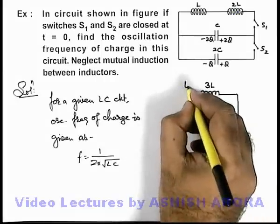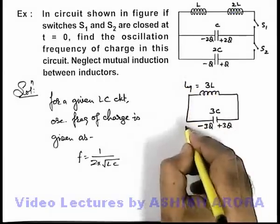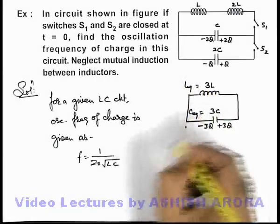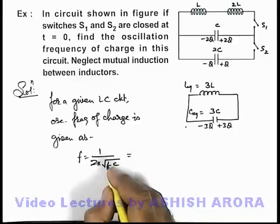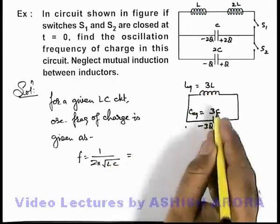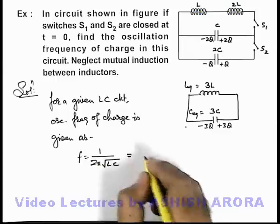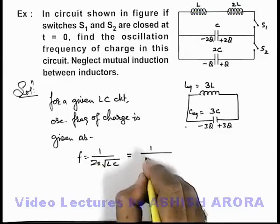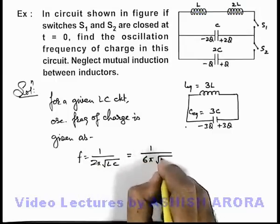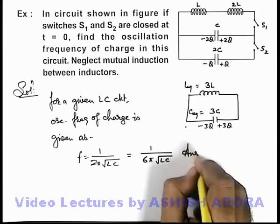Here, L_equivalent is 3L and C_equivalent is 3C. Substituting 3L for L and 3C for C into the formula, we get f = 1/(6π√LC). That is the answer to this problem.